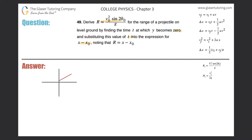We have a projectile being shot at some angle — it's going to travel in a parabolic path and eventually hit the ground. Let's call the launch point the initial state and the landing point the final state.